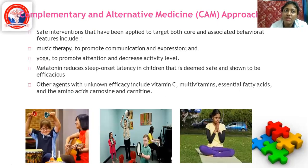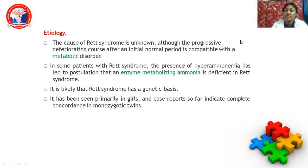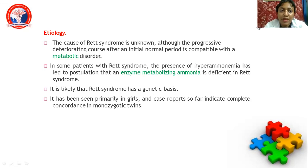Complementary and alternative medicine approaches include music therapy, yoga, melatonin for sleep, vitamin C, multivitamins, and essential fatty acids. Rett syndrome is a progressively deteriorating condition after some months of normal development. Head circumference is normal at birth and developmental milestones are unremarkable, generally until 6 months to 2 years. Prevalence is 6–7 per 10,000 and occurs purely in girls. The progressive deteriorating course is compatible with a metabolic disorder; it likely has a genetic basis and shows complete concordance in monozygotic girls.